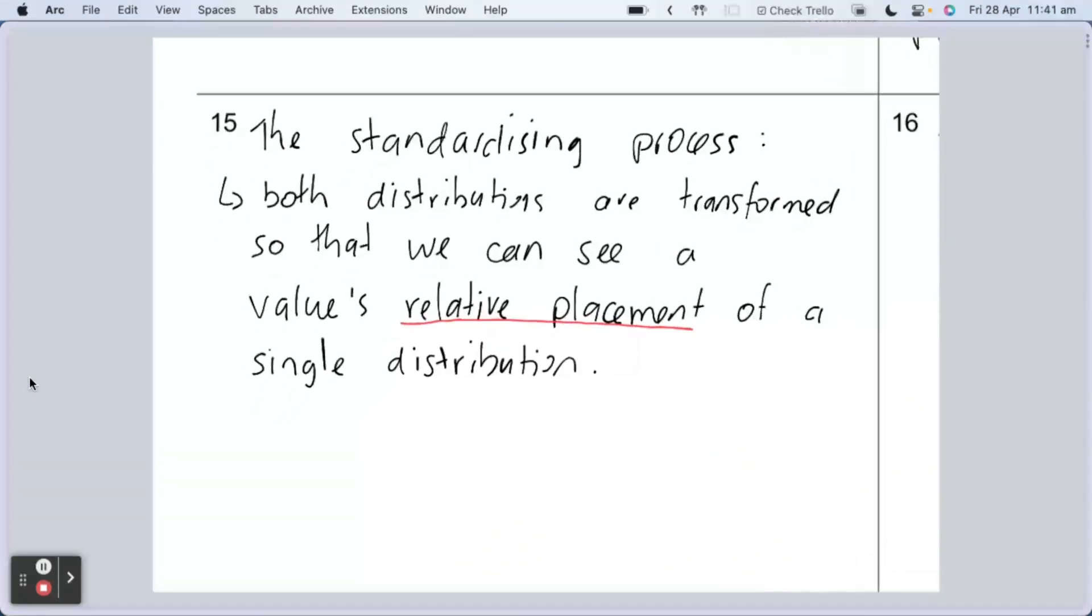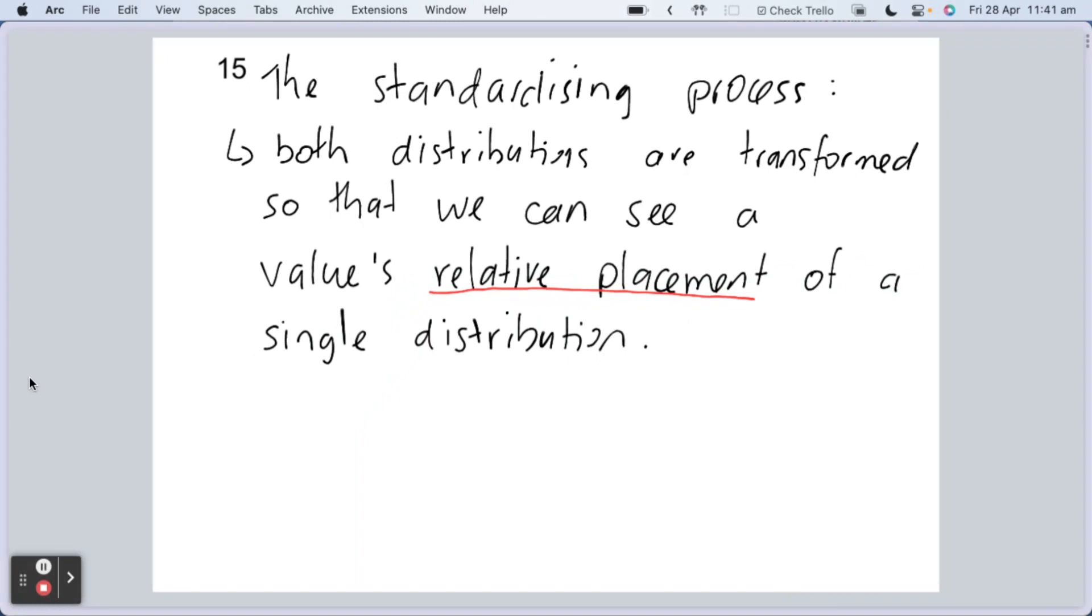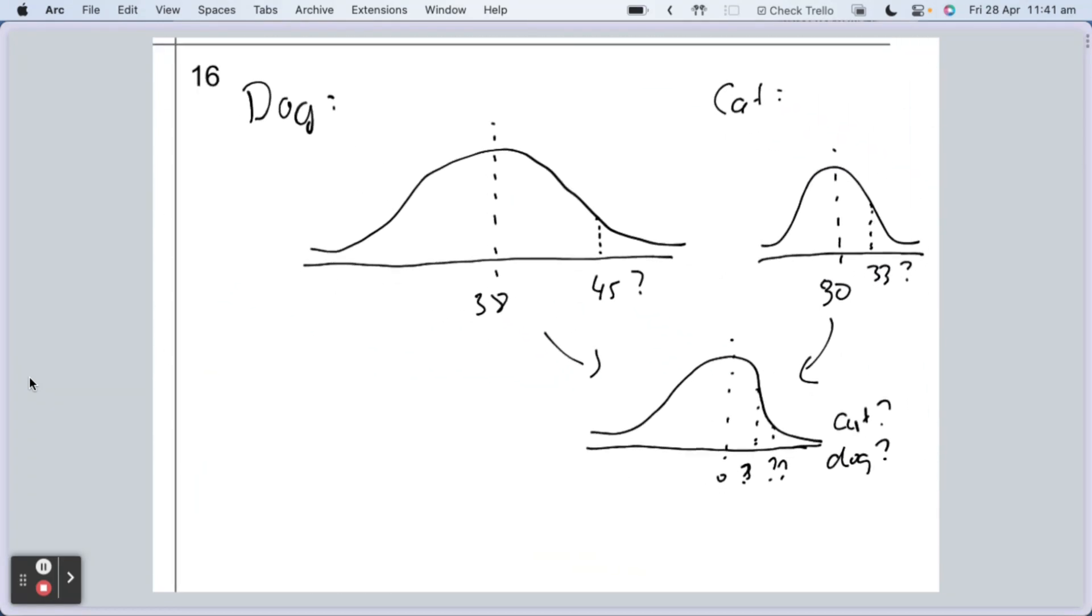What I did is I introduced this idea of a standardizing process where we look at a normal distribution where the mean is zero and the standard deviation is one. If we look at a value's relative placement on that standard normal distribution, then we can compare like for like. So that's what this diagram here was. We've got a dog with a mean of 38 and 45 will be up here somewhere. We've got a cat with mean of 30 and 33 is up here somewhere. If we standardize the normal distribution so that we've got a mean of zero and a standard deviation of one, then we'll be able to convert these two values into a place on the standard normal distribution and therefore compare which one is relatively higher than the other one.